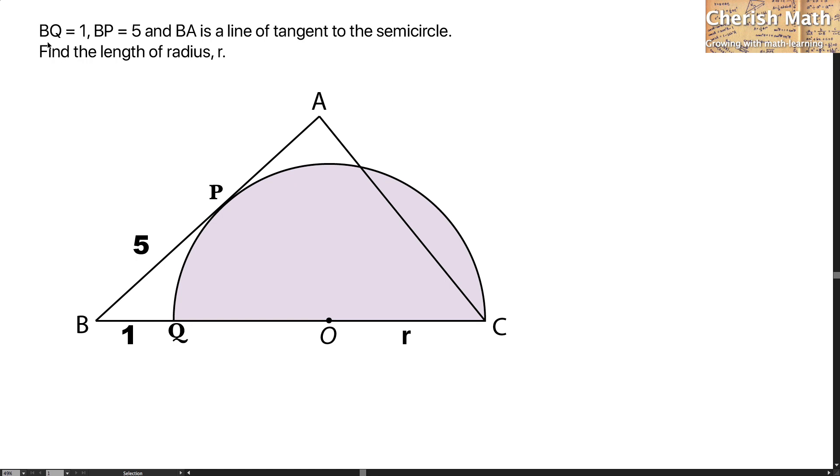According to this diagram, BQ is 1 unit, BP is 5, and BA is a line of tangent to the semicircle.